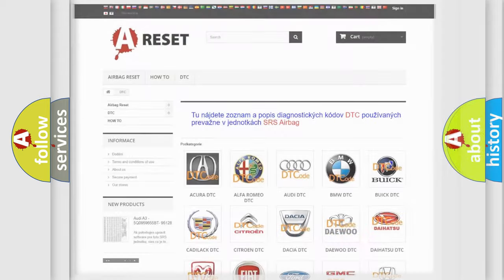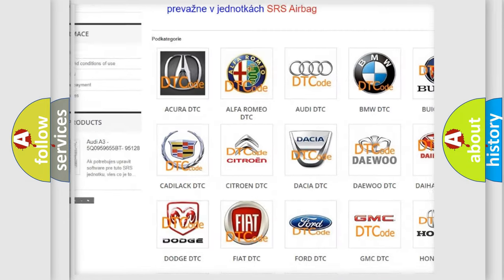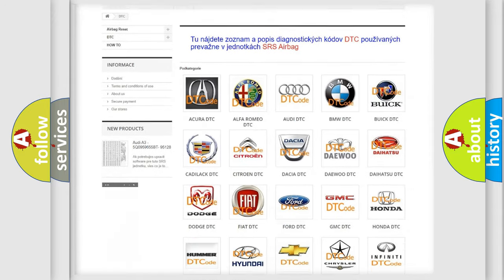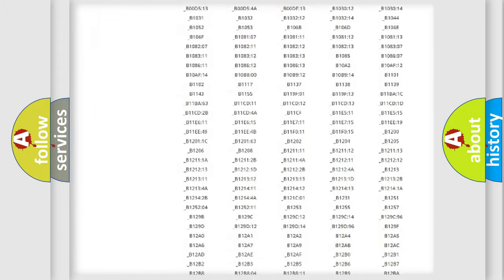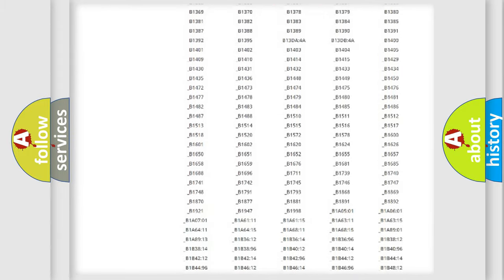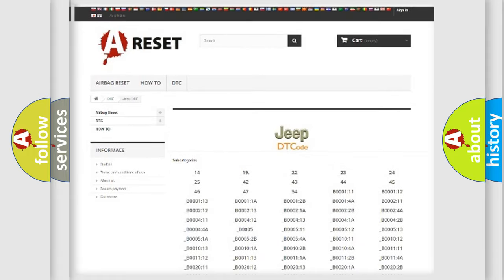Our website airbagreset.sk produces useful videos for you. You do not have to go through the OBD2 protocol anymore to know how to troubleshoot any car breakdown. You will find all the diagnostic codes that can be diagnosed in Jeep vehicles, and also many other useful things.